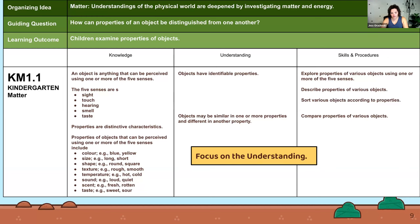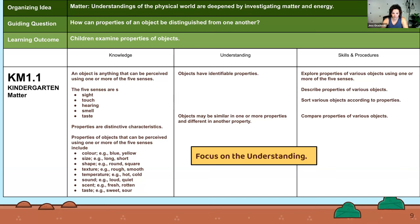In kindergarten, we have two understanding statements, and this is what you see when you look at your curriculum: the organizing idea, the guiding question, the learning outcome, and then knowledge, understanding, skills and procedures. For kindergarten there's only one row, with two understanding statements: objects have identifiable properties, and objects may be similar in one or more properties and different in another.